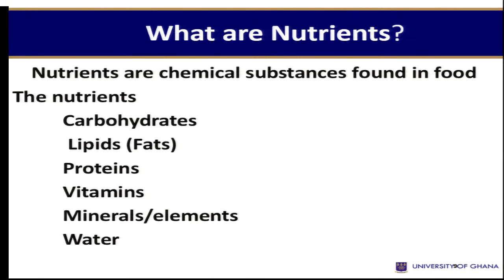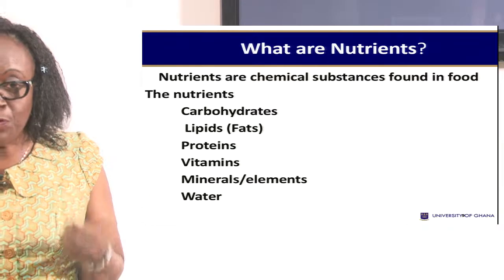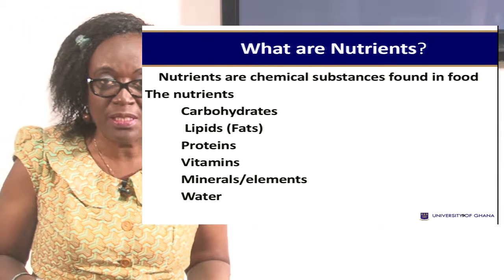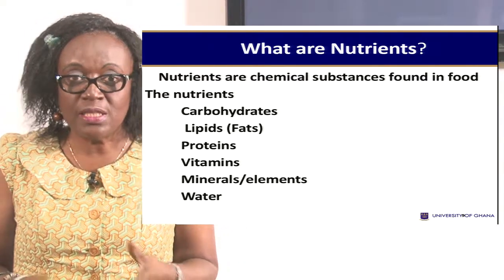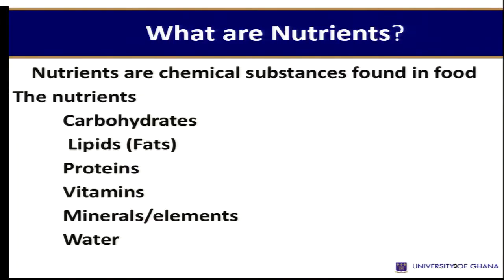What are nutrients? Food is anything solid or liquid that we eat, but this food contains chemical substances, and these chemical substances are known as nutrients. The nutrients include carbohydrates, lipids or fats, proteins, vitamins, minerals or elements, and water. It is important that you know that water is also a nutrient. So it is important that we drink water.